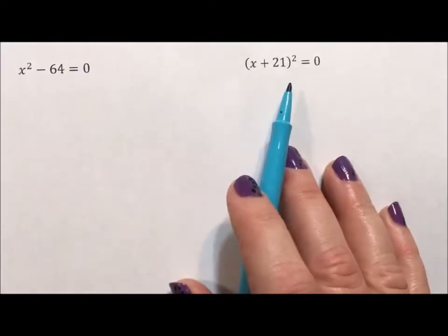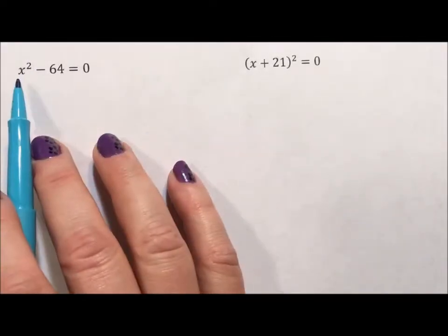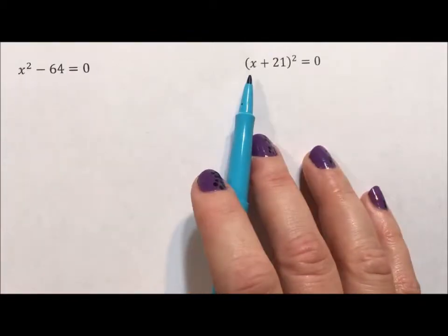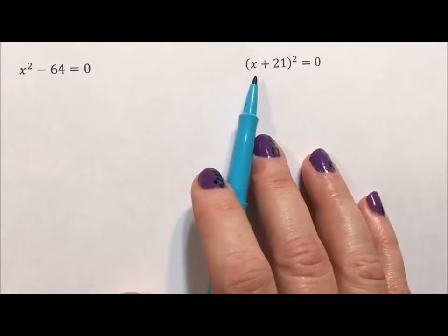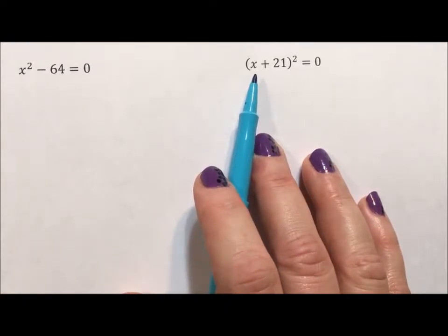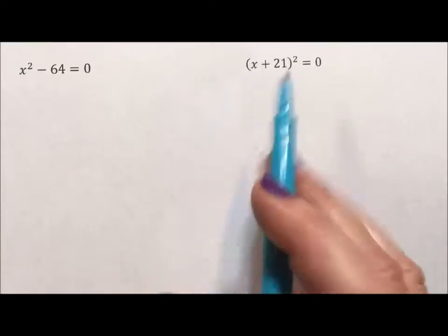In these two examples, you'll notice that the variable is only written in one term. When the variable is only written in one term, you can just isolate and solve. It's a quicker process than some of the others.